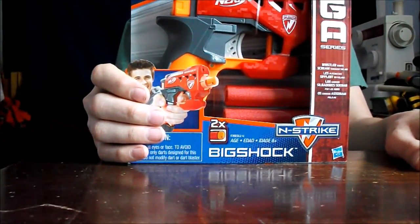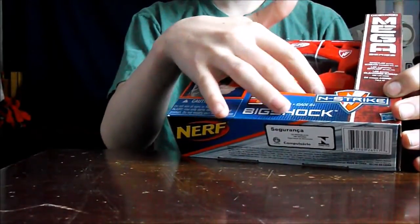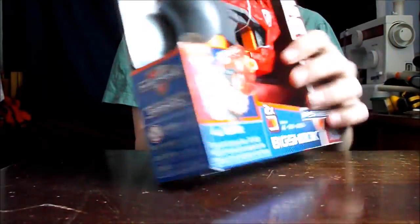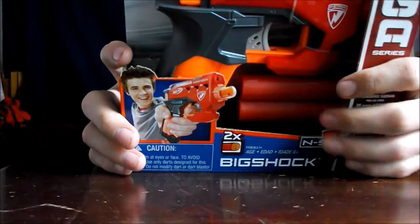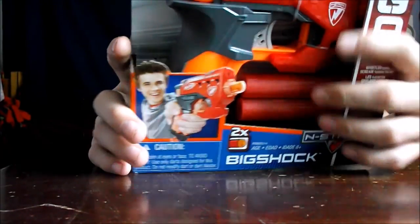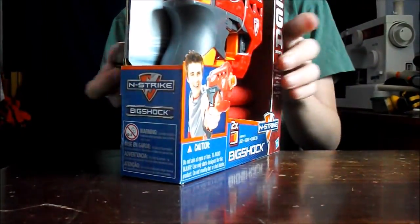It comes with the blaster and two darts. It is not listing ranges anywhere on the box. For instructions, it says pull down to ready and then pull trigger to fire. Let's go ahead and get it out of the package.